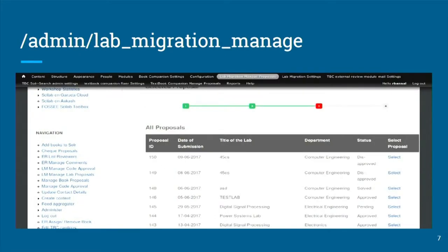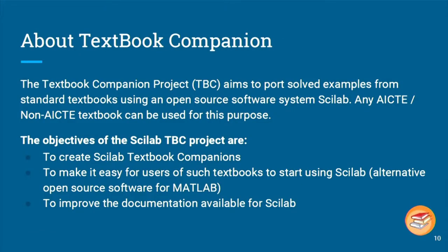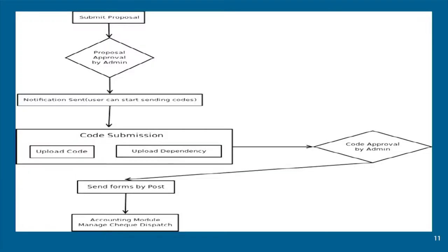About textbook companion: it aims to port solved examples from standard textbooks using open source software such as Scilab. Scilab is an open source version of MATLAB, and any AICT or non-AICT textbook can be used for this purpose. The objective is to create Scilab textbook companions to make it easy for users of such textbooks to start using Scilab, which is free, and to improve the documentation available for Scilab.